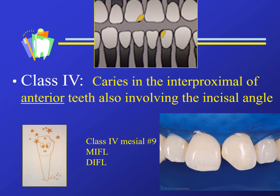This brings us to class four. Class four is caries in the interproximal of anterior teeth, also involving the incisal angle. The mesial or distal incisal corner or incisal angle will be involved, whether it is caries or fracture.